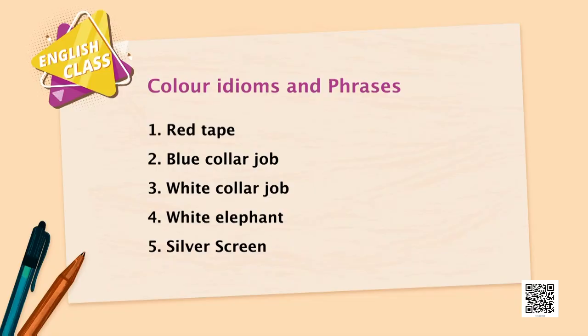This is how English and any language has such idioms and phrases. Now let us look at colour idioms: red tape, blue collar job, white collar job, white elephant, silver screen. Red tape — in big offices when you submit an application, the file goes from one person to another and takes months. That is called red tapism, because government files have red tapes. The Indian government after 1990 tried to reduce red tapism so investors and young people could start businesses.